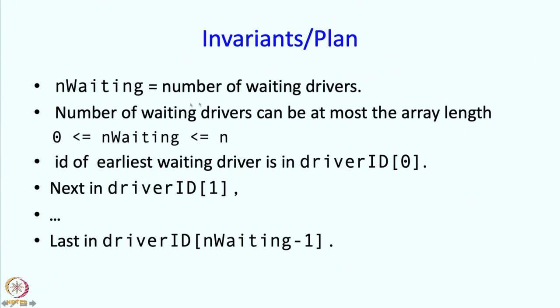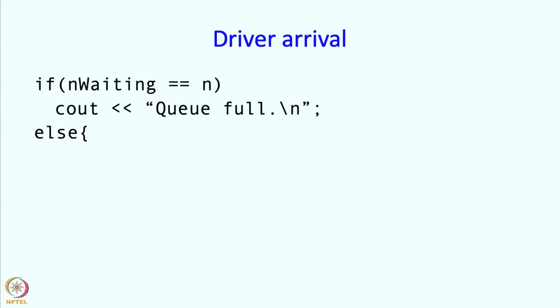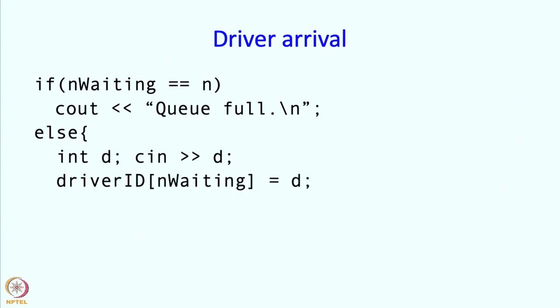There are nWaiting drivers occupying positions 0 through nWaiting - 1, so a new arriving driver should be placed at driverID[nWaiting]. On driver arrival: if nWaiting equals N the queue is full. Otherwise, we get the driver ID into a variable d, store it in driverID[nWaiting], and then increment nWaiting. This way nWaiting never exceeds N and all invariants are maintained.